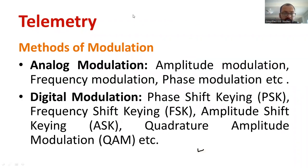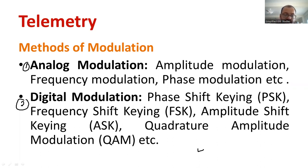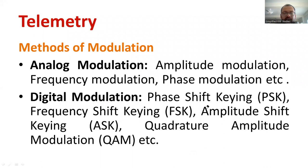There are two types of modulation. The first is analog modulation and the second is digital modulation. Analog modulations include amplitude modulation, frequency modulation, and phase modulation. Digital modulation can be categorized as phase shift keying (PSK), frequency shift keying (FSK), amplitude shift keying (ASK), and quadrature amplitude modulation (QAM). These are the various digital modulation techniques — a broad classification of modulation.